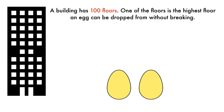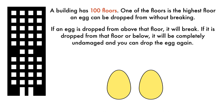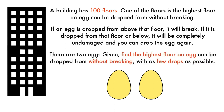A building has 100 floors. One of the floors is the highest floor an egg can be dropped from without breaking. If an egg is dropped from above that floor, it will break. If it is dropped from that floor or below, it will be completely undamaged and you can drop the egg again. There are two eggs given. Find the highest floor an egg can be dropped from without breaking with as few drops as possible.